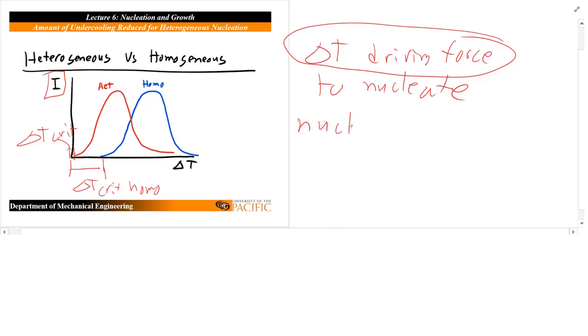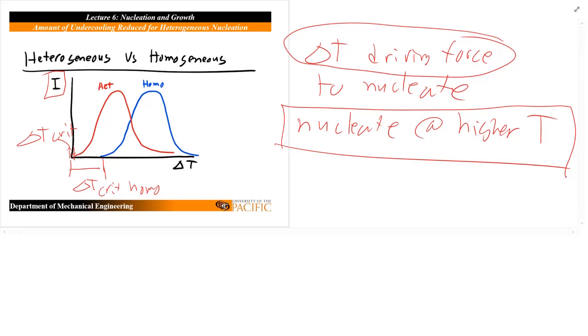So you see the shift here, the curve shifts for heterogeneous nucleation to lower and lower T crits. We can nucleate, this is saying that we can nucleate at higher temperatures. So this is a critical finding, all just because we have to create less surface area. That's the only difference between heterogeneous and homogeneous nucleation.